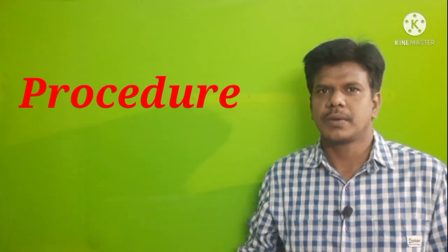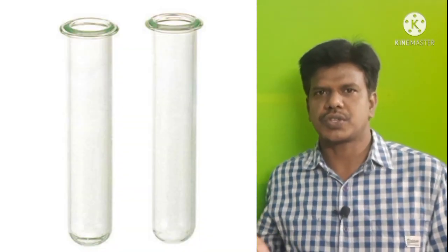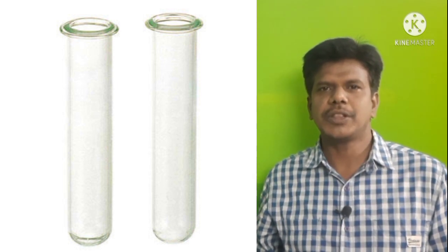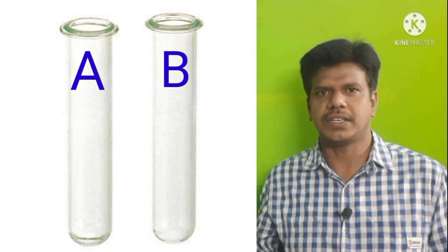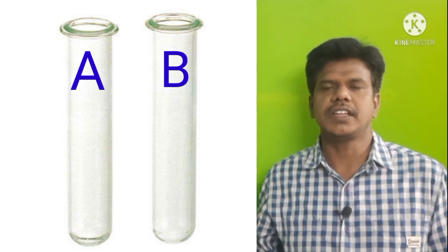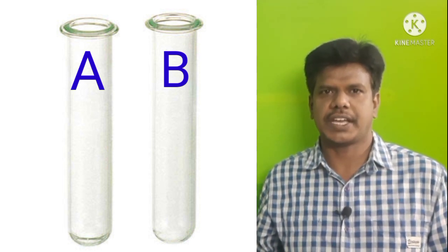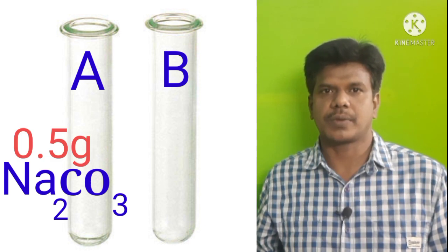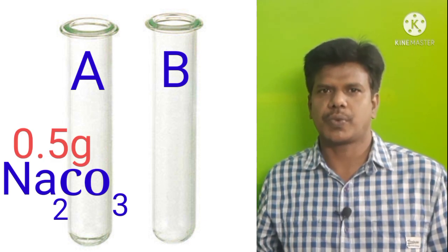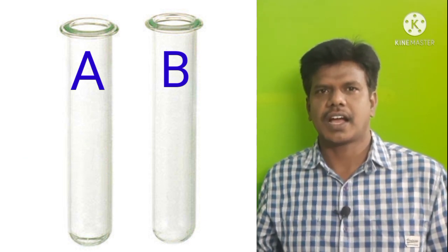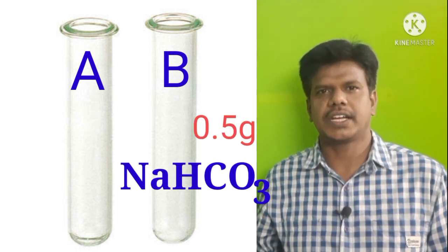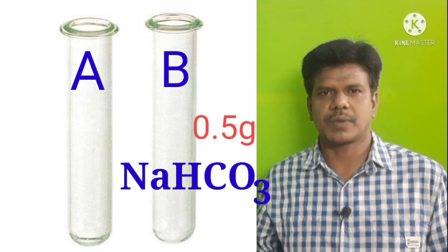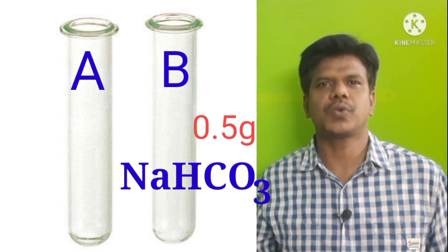For the procedure, take two test tubes and label them A and B. In the first test tube A, take 0.5 grams of sodium carbonate, and in the second test tube B, take 0.5 grams of sodium bicarbonate.